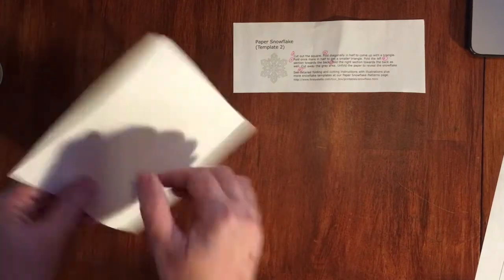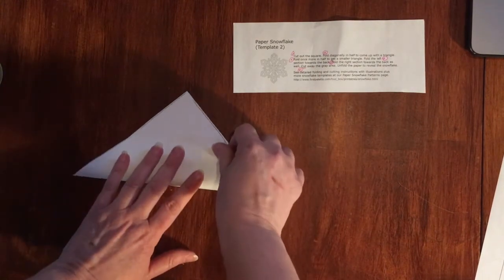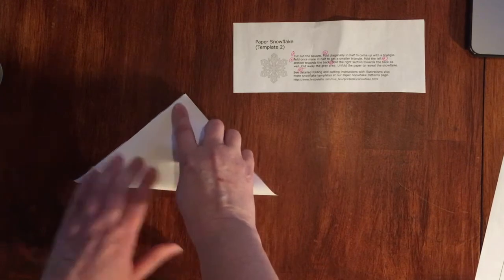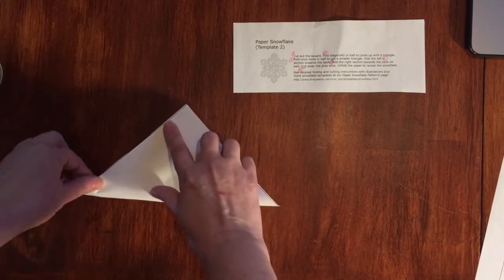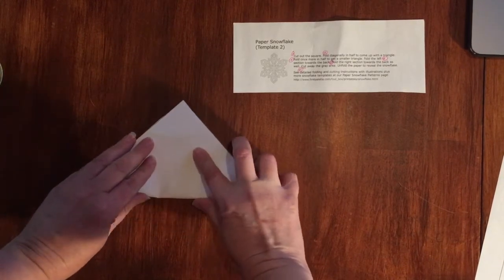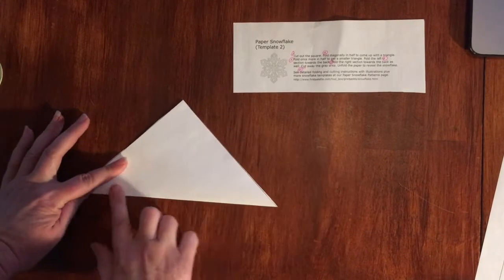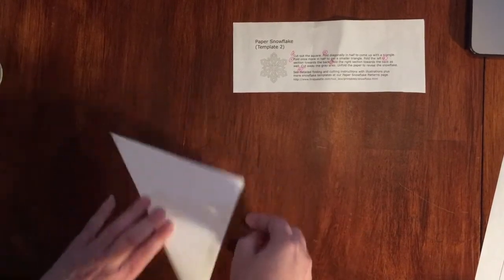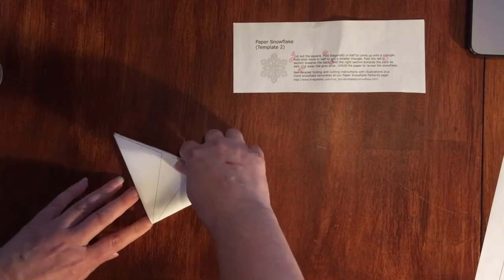Then we fold it diagonally in half, and then we fold it once more to get a smaller triangle. Notice how I'm folding.